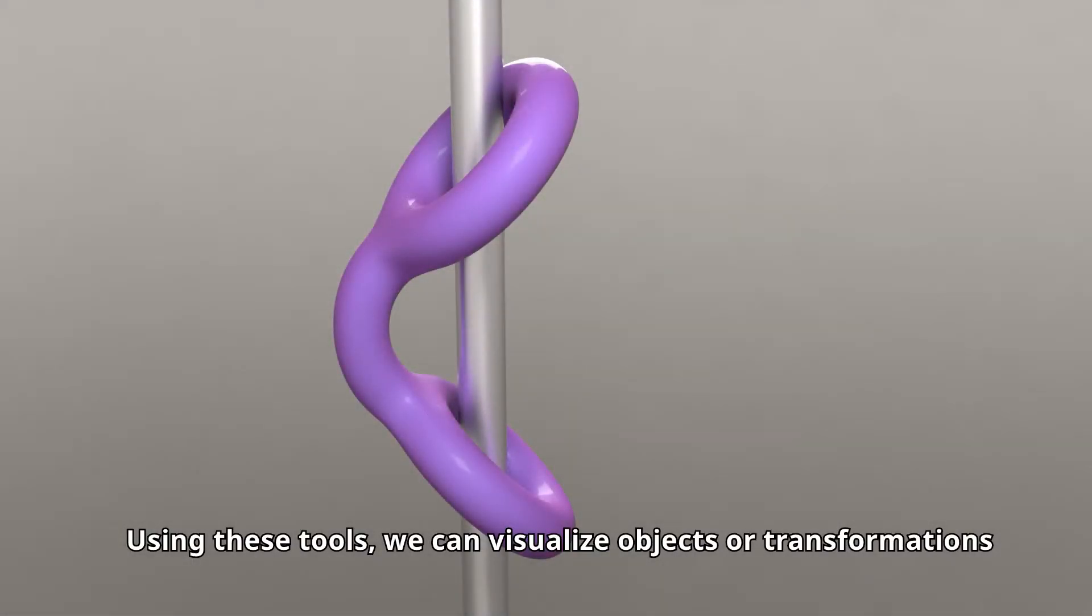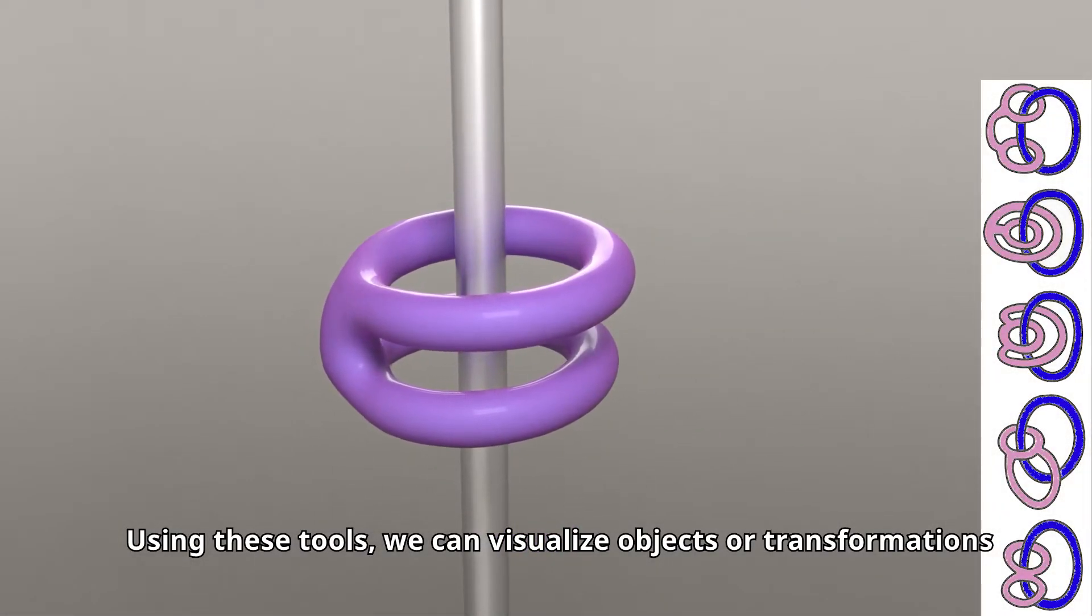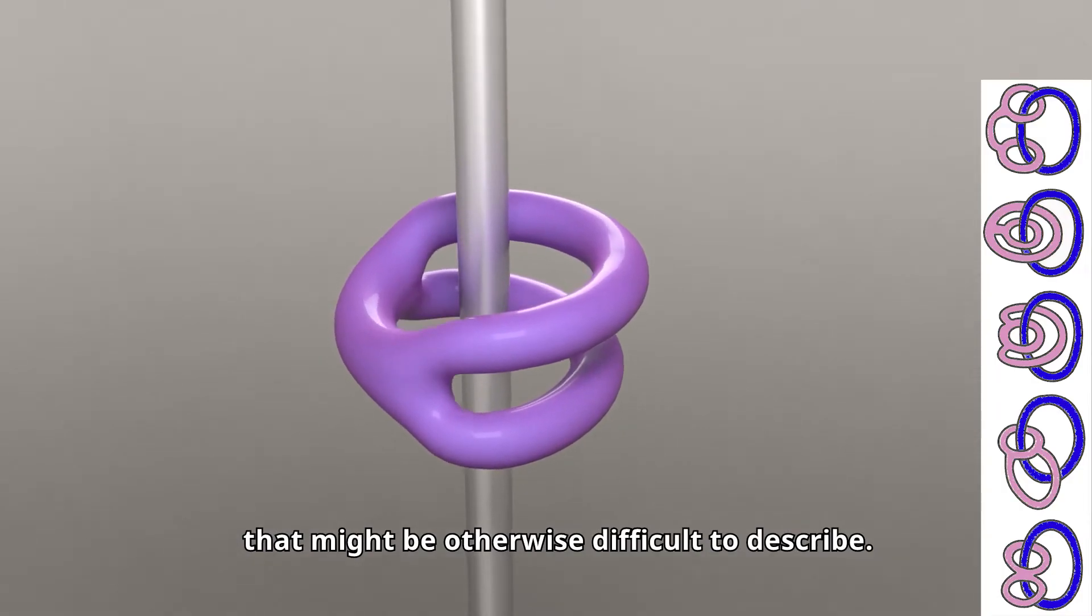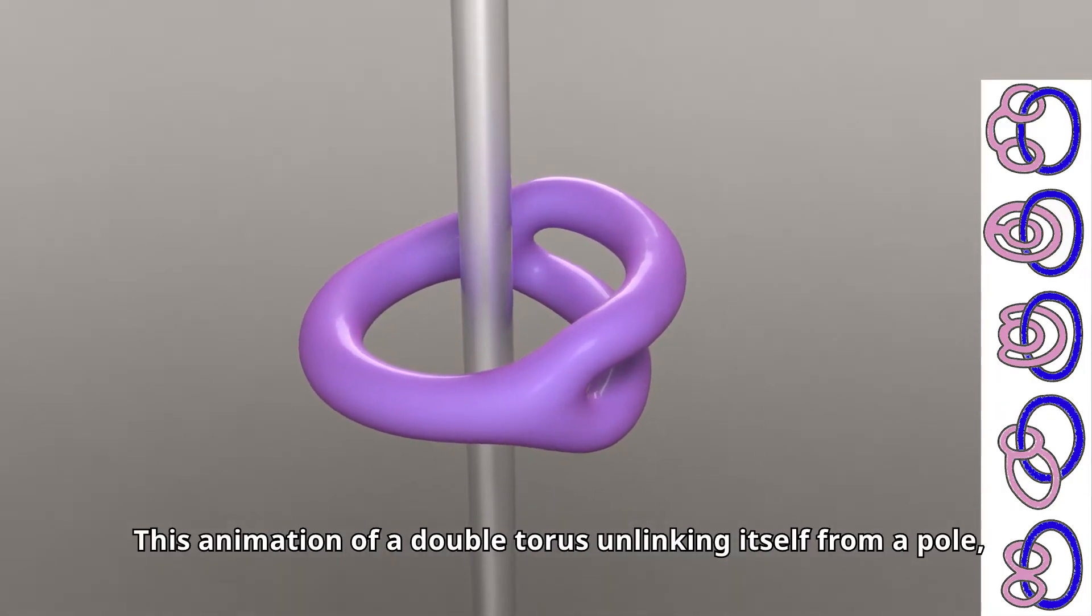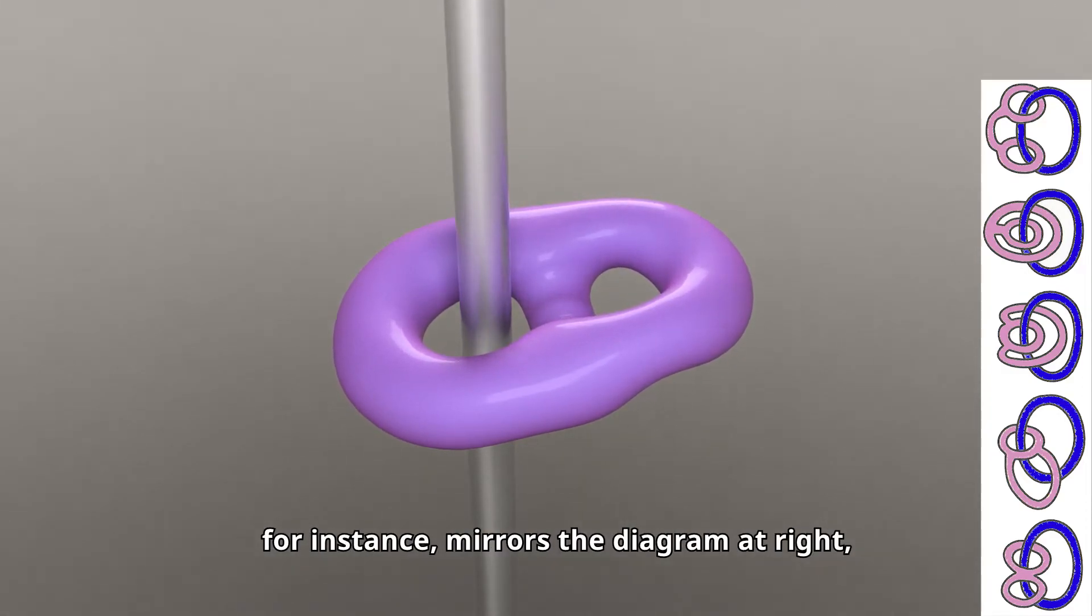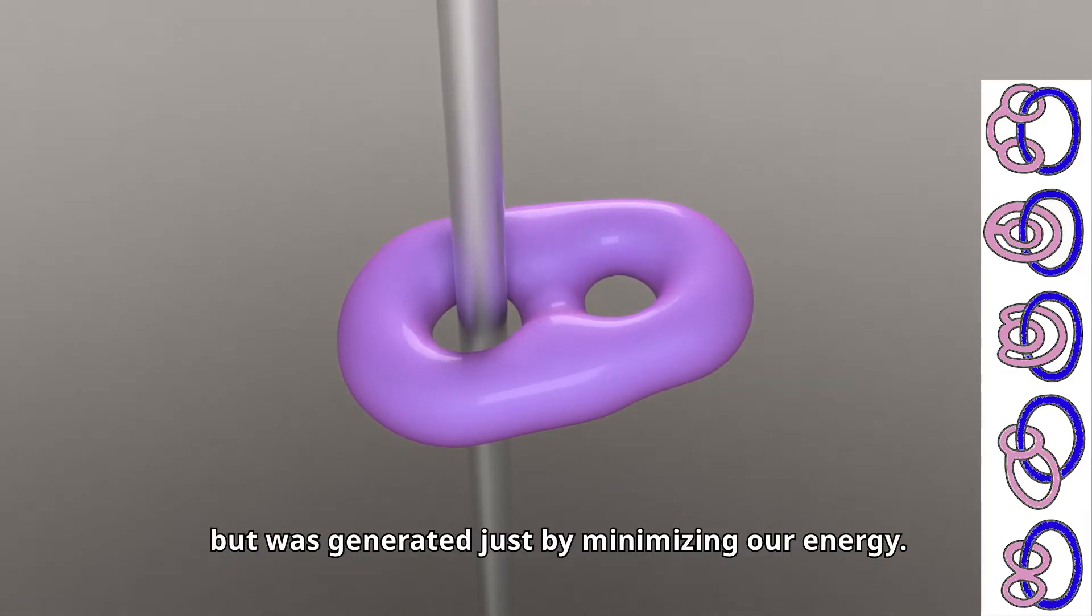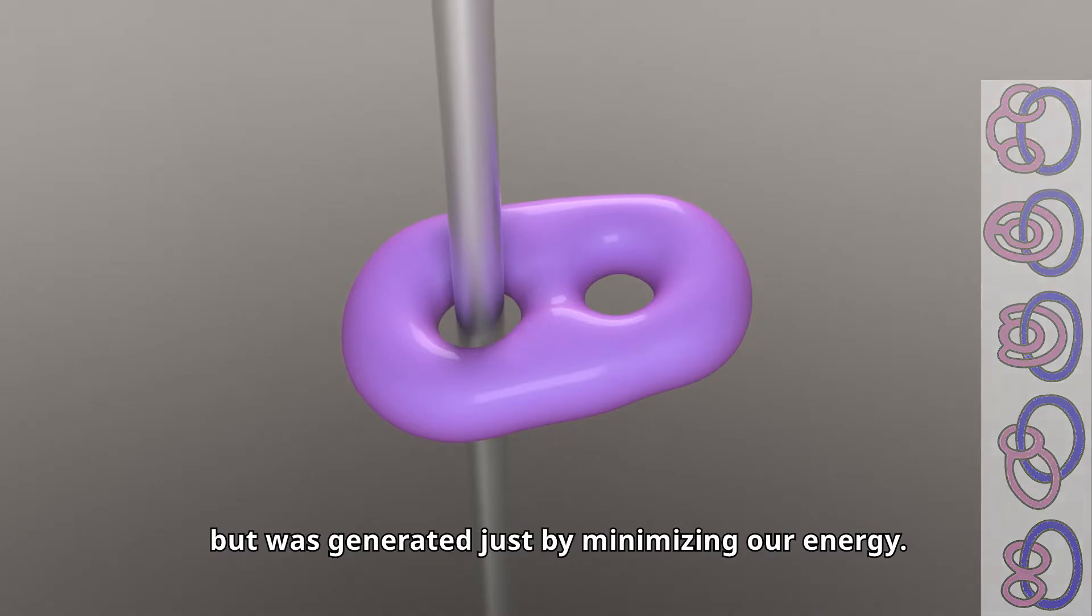Using these tools, we can visualize objects or transformations that might be otherwise difficult to describe. This animation of a double torus unlinking itself from a pole, for instance, mirrors the diagram at right, but was generated just by minimizing our energy.